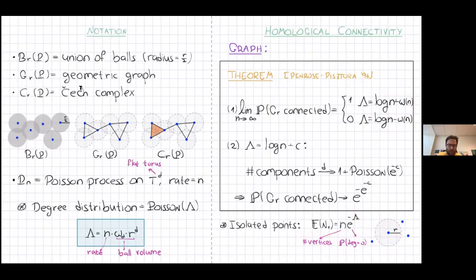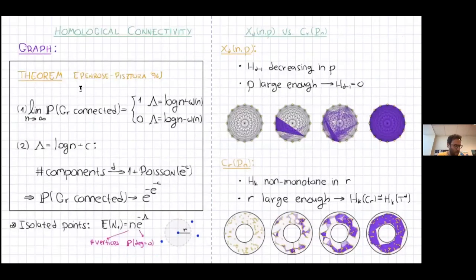The other steps of the proof are similar in spirit but much more complicated because we lack the nice independence and counting properties of the Erdős–Rényi graph — but the idea is the same.